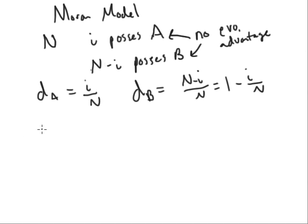Likewise, the way that we pick who is born with a given allele, that probability, let's say B_A, is just going to be equal to i over N once again. And then this will also be equal to 1 minus i over N.